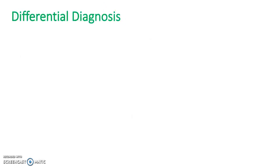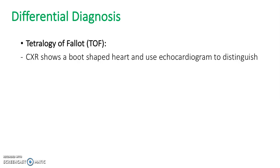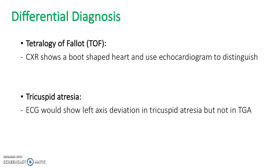What differential diagnoses might we see? Tetralogy of Fallot — although with tetralogy of Fallot the chest x-ray would show a boot-shaped heart, and you could use echocardiogram to distinguish between them. Tricuspid atresia — an ECG would show left axis deviation in tricuspid atresia but not in TGA.